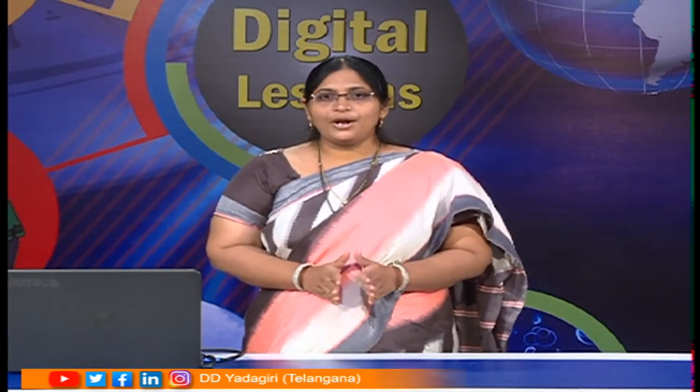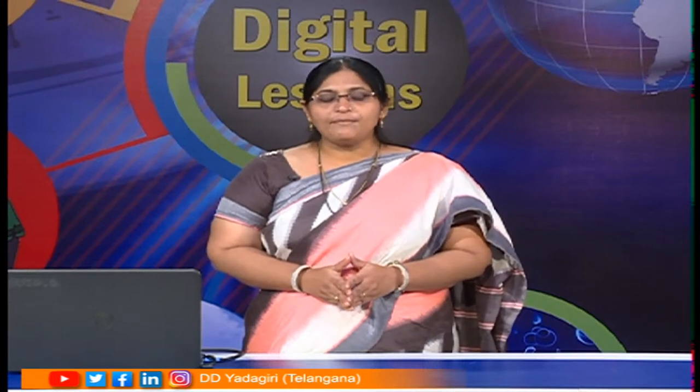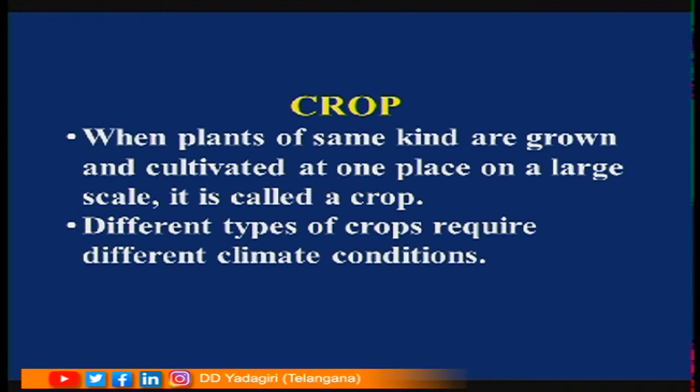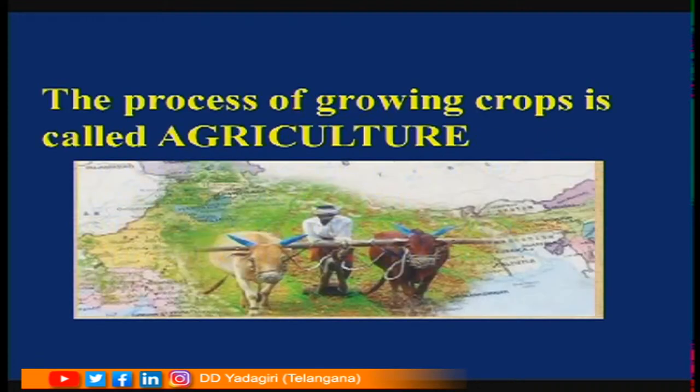Have you understood? Farmers grow different types of crops, and different types of crops require different climatic conditions. This process of growing crops is called agriculture. So crop means same type of plants, and growing this type of crop is called agriculture.